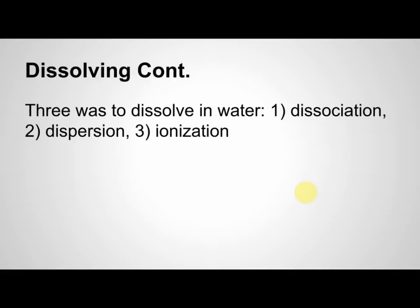There are three different ways that things can dissolve in water. One is dissociation. Two is dispersion. And three is ionization. We will cover each one of these in particular and go through a couple of examples.